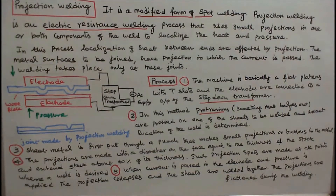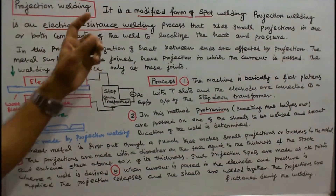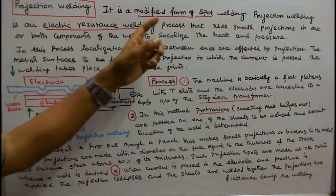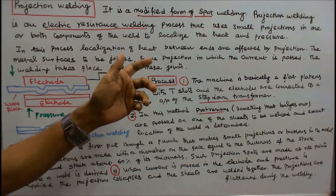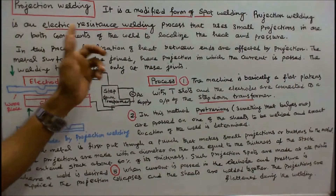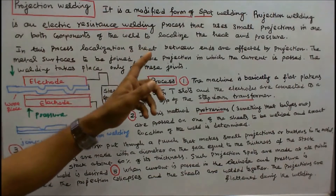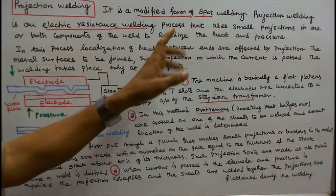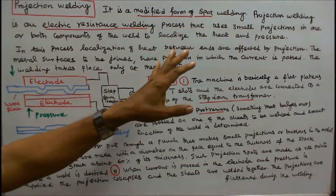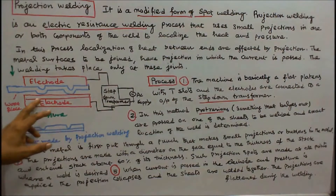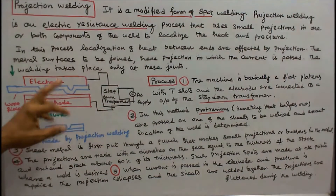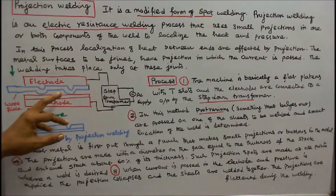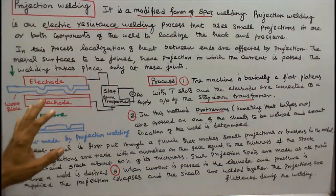Projection welding. This class we discuss about projection welding. Projection welding is a modified form of spot welding. It is an electric resistance welding process that uses small projections in one or both components of the weld to localize the heat and pressure.